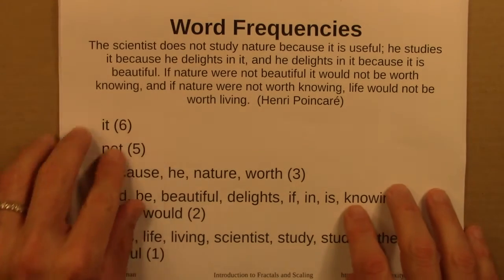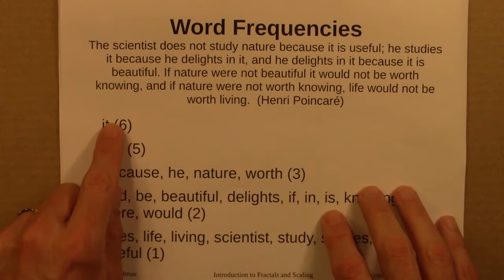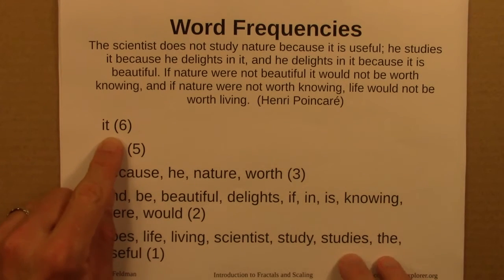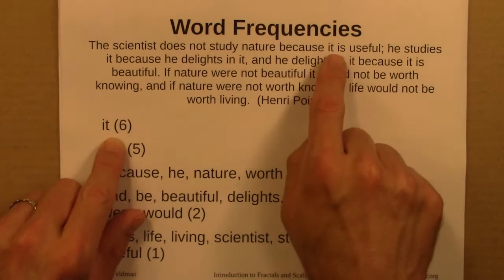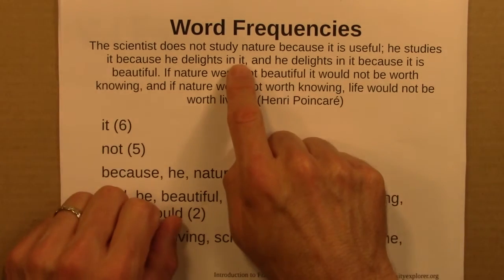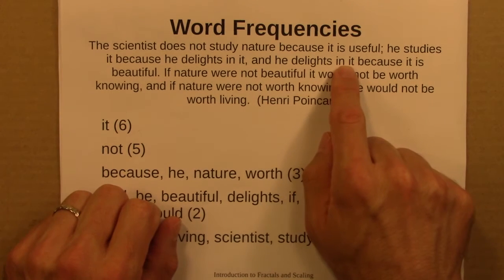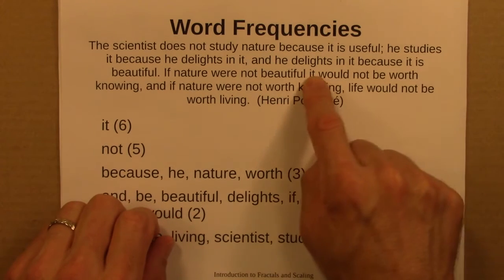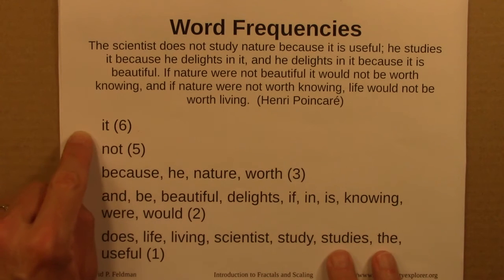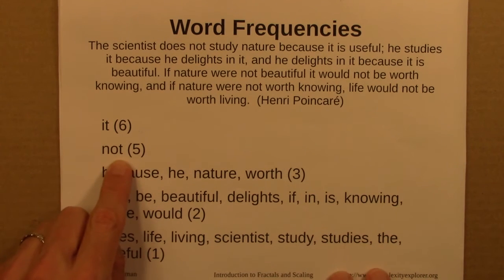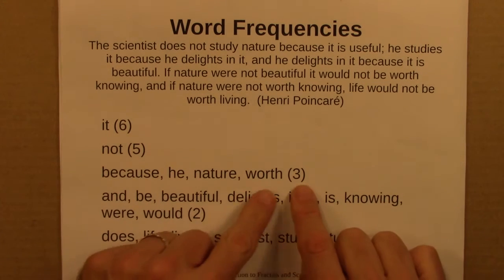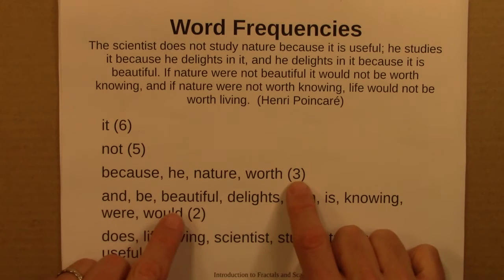So let's think about how often certain words appear here. The word 'it' appears six different times in this passage — one, two, three, four, five, six. So there are six occurrences of the word 'it.' The word 'not' appears five different times.